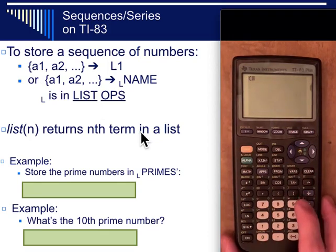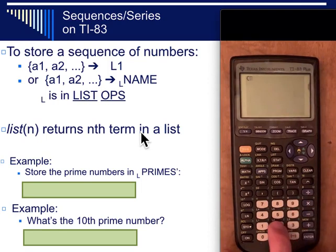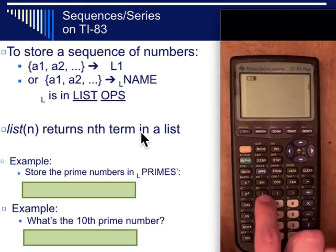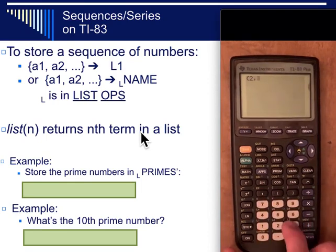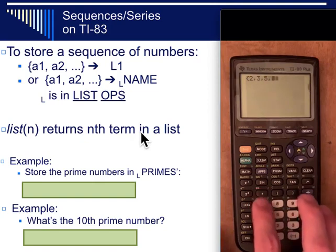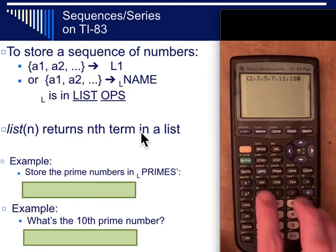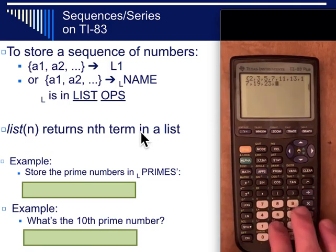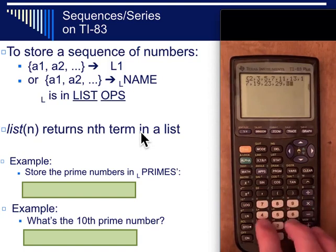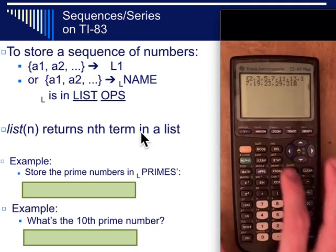So suppose I wanted to type in the set of prime numbers. I could do that by typing two and then the comma buttons here and three, five, seven, and eleven and thirteen, seventeen, nineteen, twenty-three, twenty-nine, thirty-one I think. Anyway that's good enough for now.